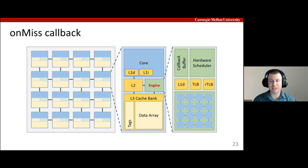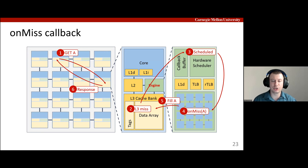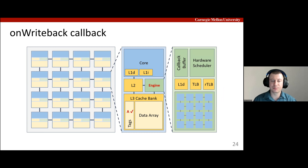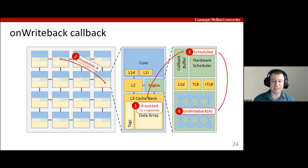To see how TACO works, let's walk through if TACO executes an on-miss callback on phantom data at the L3. A core loads phantom address A, which misses in the L3. The cache controller checks that the address is registered with TACO, so it spawns a thread to run the callback. On-miss then fills in the data, which is returned to the core when the callback ends. Subsequent loads to address A hit the L1 like normal. And when data is evicted from the L3 cache, TACO will similarly execute an on-writeback callback. The tags indicate that the address is registered, so after the child caches are invalidated, the controller invokes on-writeback on the data. Once the callback completes, the data is evicted from the cache.